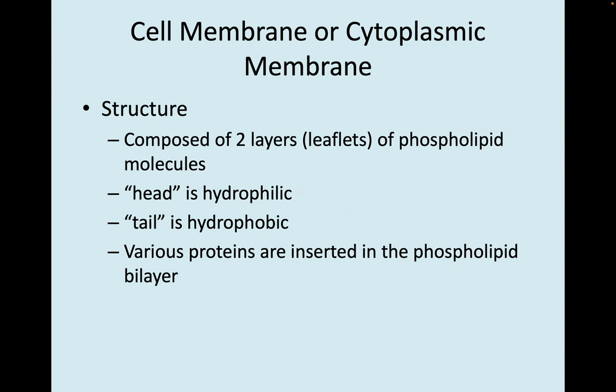Cell membrane or cytoplasmic membrane — these are synonyms. The structure is composed of two layers or leaflets of phospholipid molecules. A phospholipid is a molecule with two parts: a head that's hydrophilic, so it likes water, and a tail that's hydrophobic or water-fearing. They orient themselves so the hydrophobic tails face each other in the two layers, and the hydrophilic heads face the outside or inside of the cell cavity, since the cytoplasm and the environment where bacteria are found are all water-based.